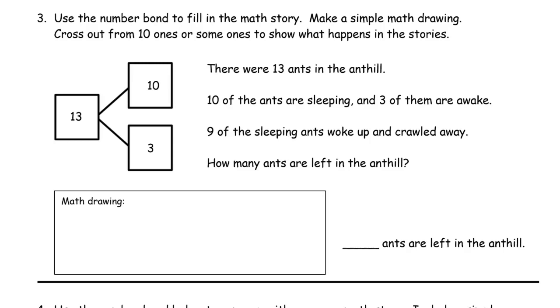Number three. Use the number bond to fill in the math story. Make a simple math drawing. Cross out from ten ones or some ones to show what happens in the stories. There are thirteen ants in the ant hill. Ten of the ants were sleeping, label those with an S. And three of them are awake. We'll make this an H for hill.